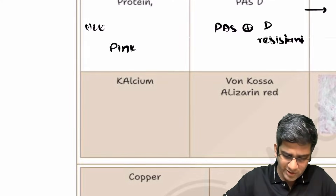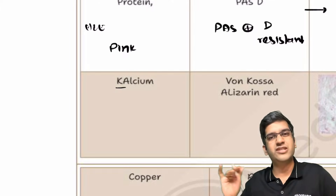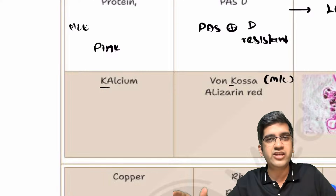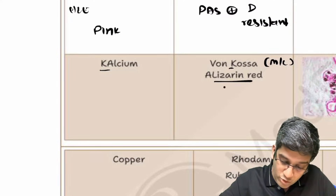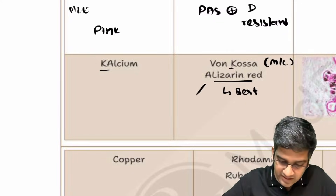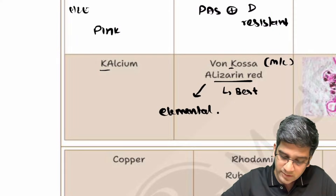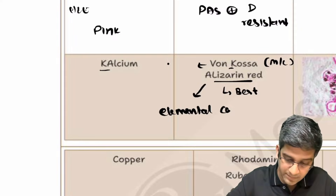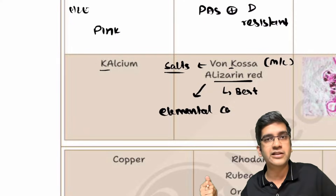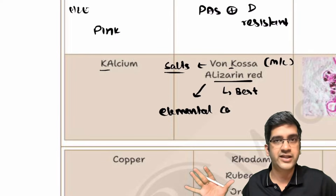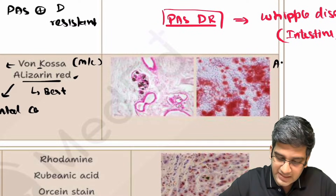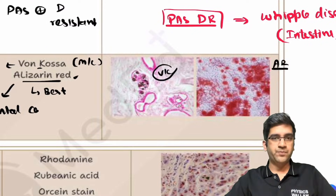For calcium, there is an age-old mnemonic every pathology resident knows: KARL for CAL. K stands for Von Kossa (VK) — this is the most commonly used stain for calcium in every hospital, lab, and college. Alizarin Red is an excellent stain, considered the best for calcium, but it is expensive. Alizarin Red can even identify elemental calcium — Ca²⁺ in ionic state — while Von Kossa generally picks up calcium salts. For diagnostic purposes, salts are sufficient, so Von Kossa is commonly used.